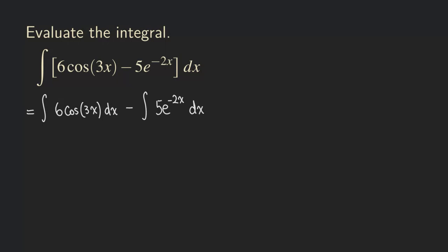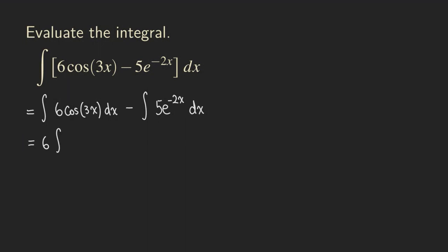According to the constant multiple rule for differentiation, when we take the derivative of a function, we do not need to worry about differentiating the constant — we can just keep the constant in front and only worry about differentiating the function. So when we go backward and integrate, we do not need to worry about the constant either. We can bring the constant outside the integral. So the six is taken outside the first integral, giving us six times the integral of cosine three X dx, and then minus five times the integral of E to the negative two X dx.